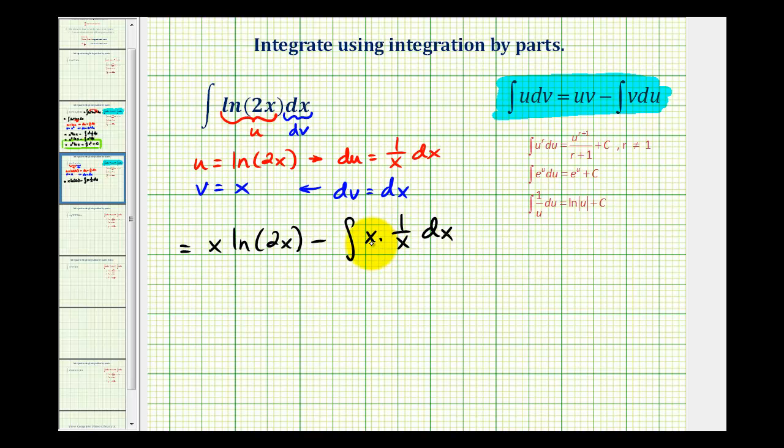Well, x times 1 over x would just be 1. So we'll have x natural log 2x minus the integral of 1 dx.